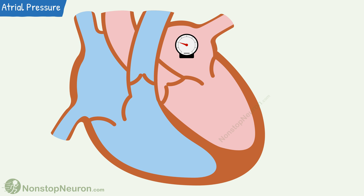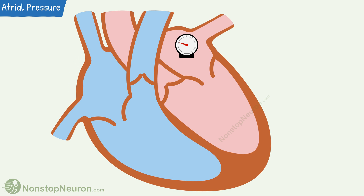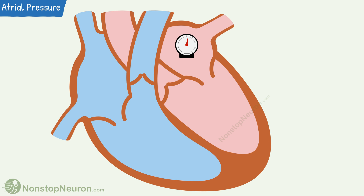Let's start our discussion with atrial systole. During this, atrioventricular valves are opened and ventricles are under diastole. The contraction of the atria causes a rise in the pressure in the atria. Then as the atria begin to relax, there is a little fall in the pressure.